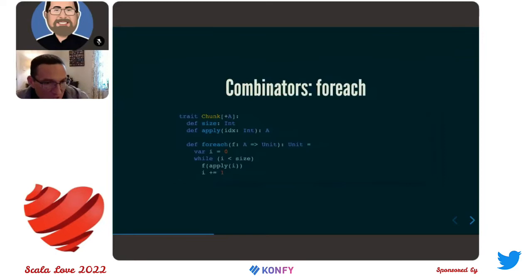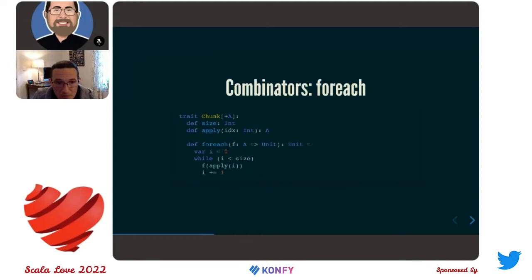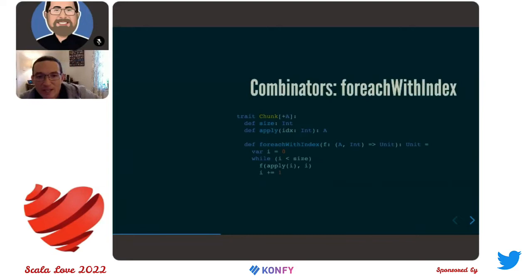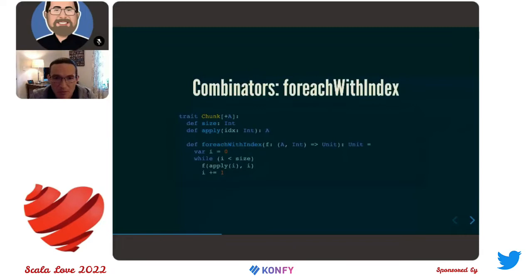Let's take a look at a couple other simple combinators. We said we want while loops to be really fast, but we can also define the iteration pattern across all elements just using a standard Scala `forEach`. We can implement that in the trait itself as a while loop, starting at index zero and ripping through all of the elements. This is safe to do in the trait itself because of that guarantee that apply will be efficient — that's the key point. Likewise, we can have `forEachWithIndex`, same exact idea, passing the index each time through the loop.